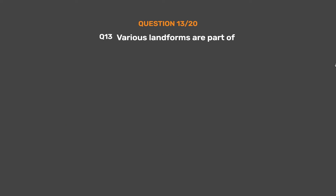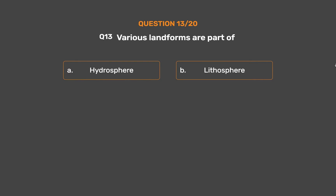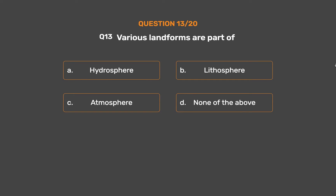Question No. 13. Various landforms are part of? Option A: Hydrosphere. Option B: Lithosphere. Option C: Atmosphere. Option D: None of the above. The correct answer is Option B: Lithosphere.